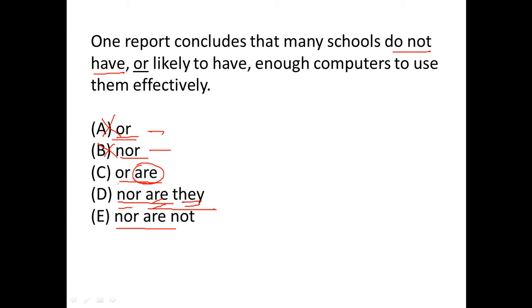It says schools do not have this, NOR they are likely to have something else. So we need NOR here. They do not have X NOR Y, so we need NOR here. So eliminate C.